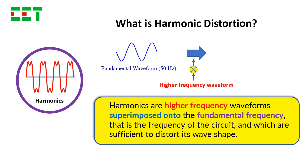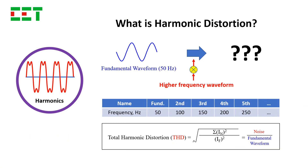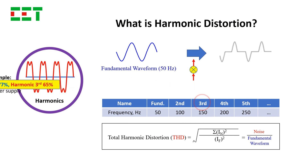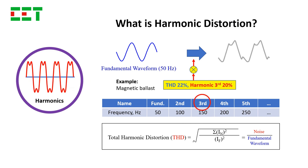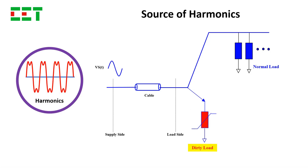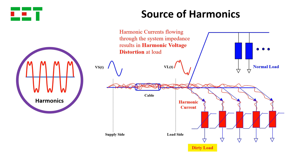They are higher frequency waveforms superimposed onto the fundamental frequency. Let's see what happens when we mix a higher order of frequency into a pure sinusoidal waveform. The harmonic currents flow through the system impedance, resulting in harmonic voltage distortion at the load.